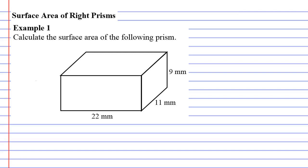Surface area of right prisms. Now if you're wondering what surface area is, if we look at this rectangular prism in example 1, surface area is the area on the outside of the shape.